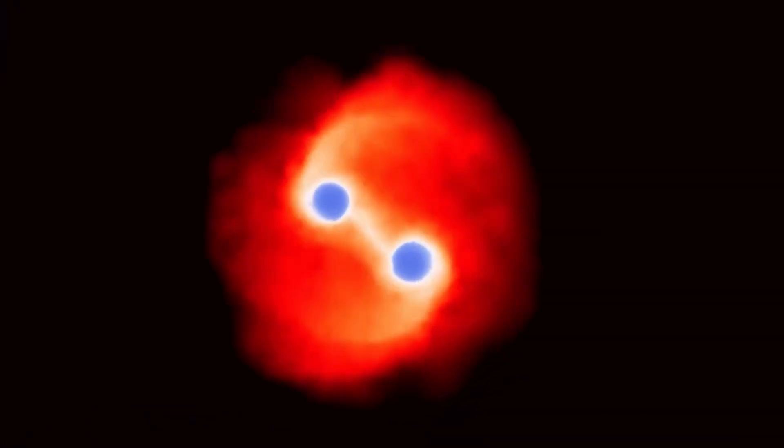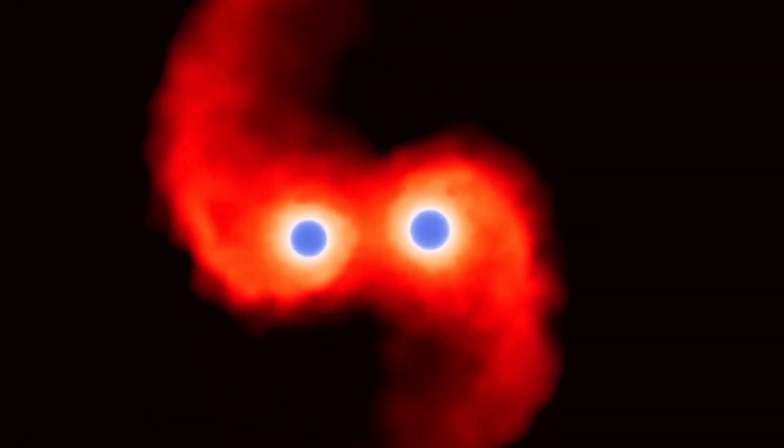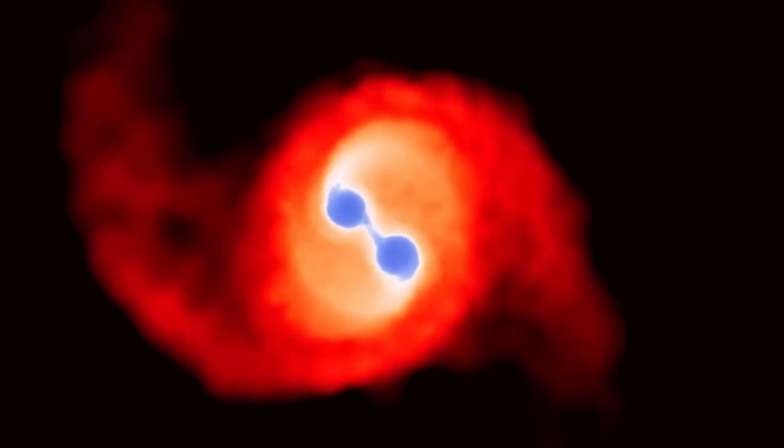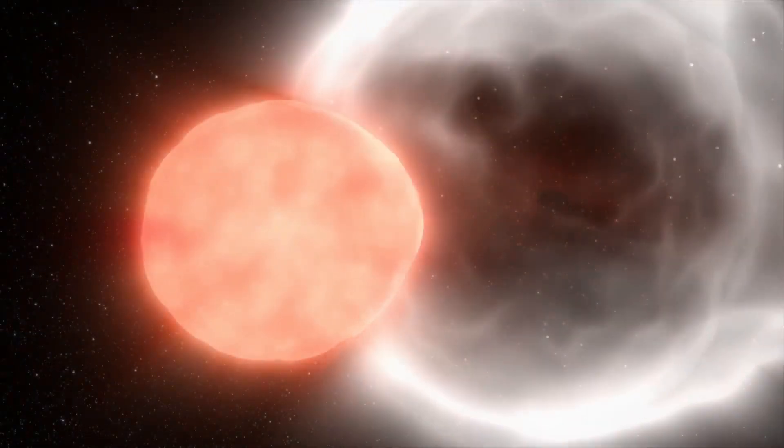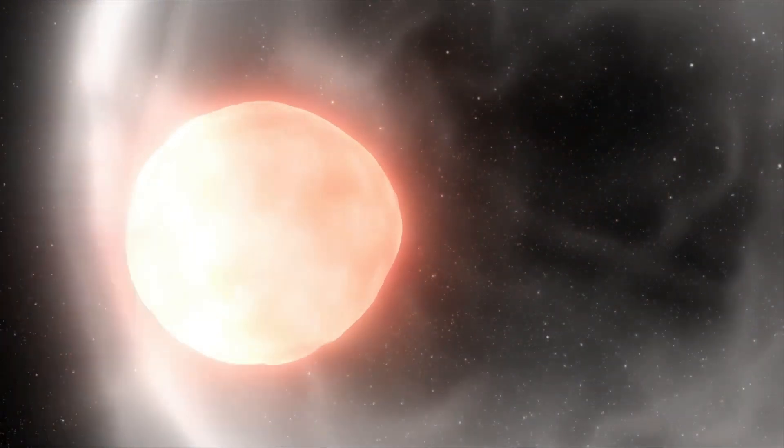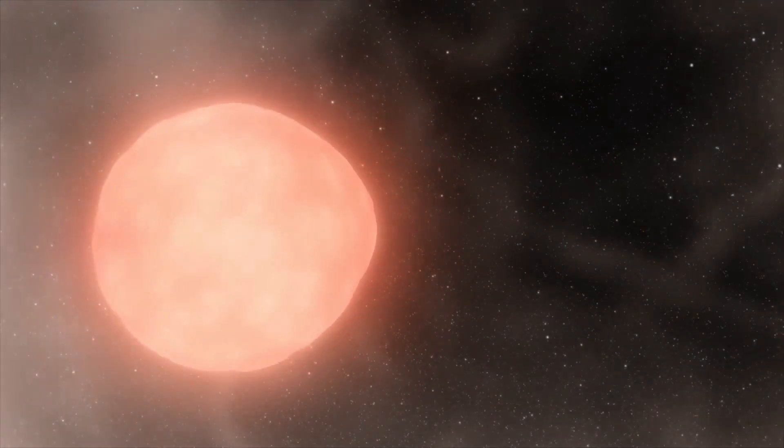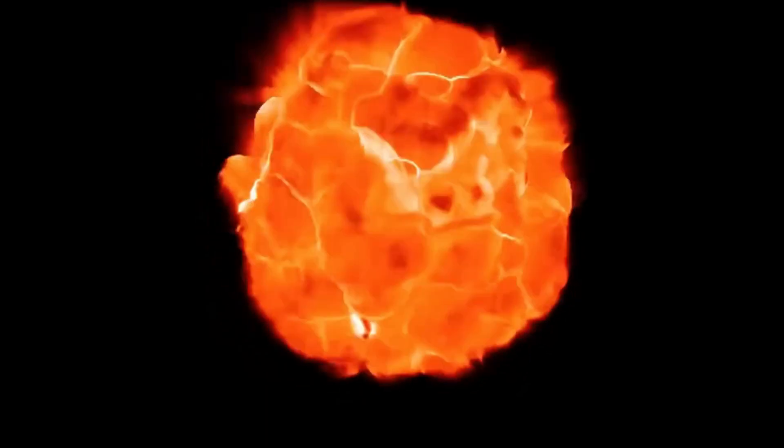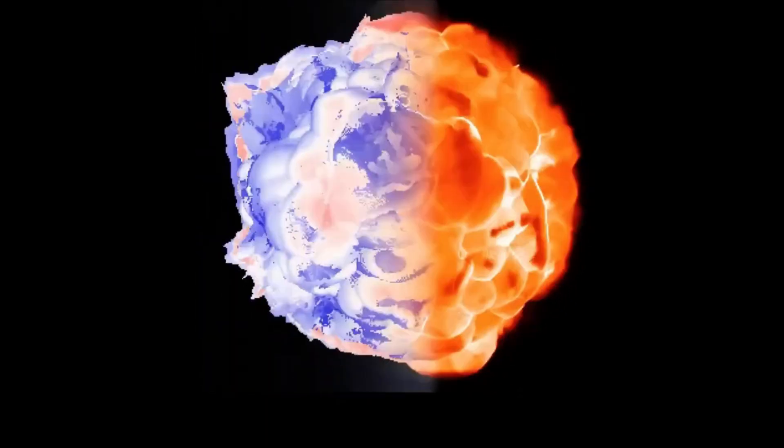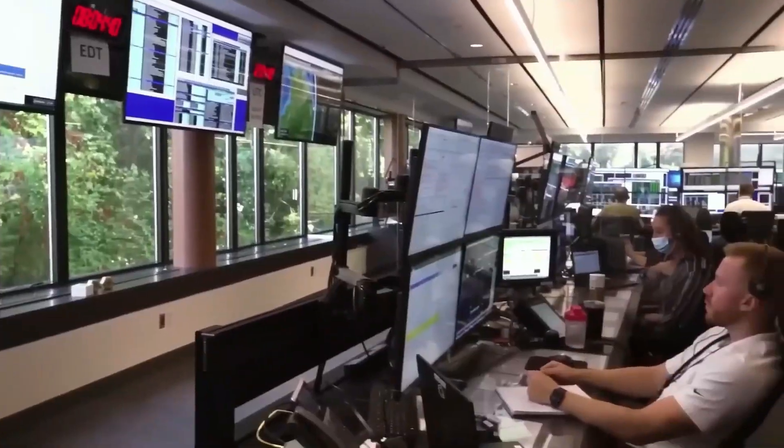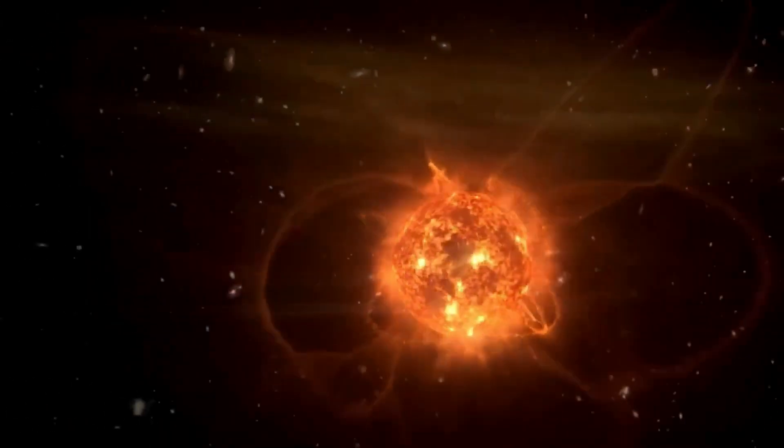This interaction could explain Betelgeuse's erratic behavior and rapid rotation. As Betelgeuse cannibalizes its companion, the material it absorbs could affect its internal processes and lead to the observed dimming and fluctuations in brightness. Some researchers suggest that this could be a precursor to the star's impending collapse, as the sudden influx of material could destabilize Betelgeuse, pushing it closer to a supernova.